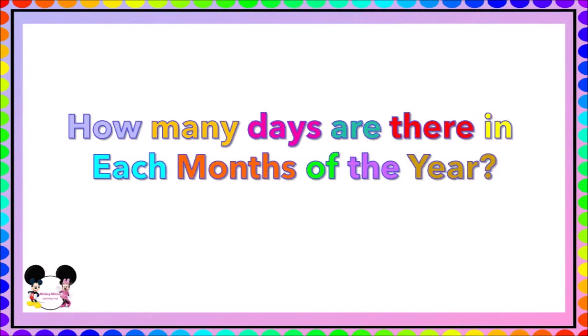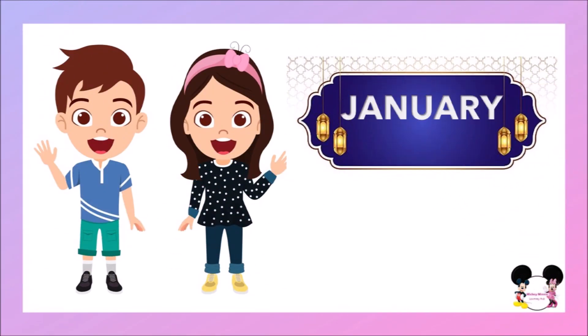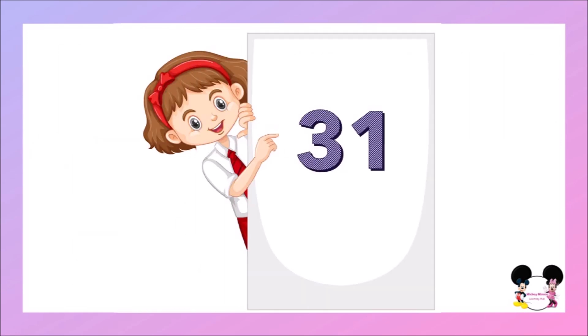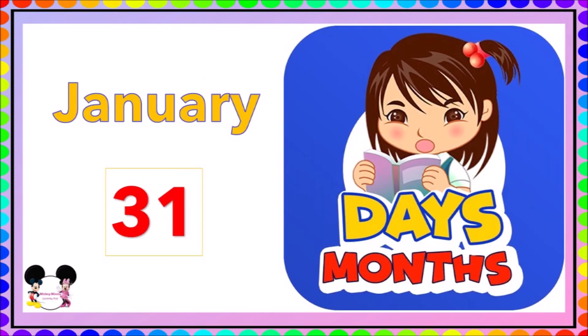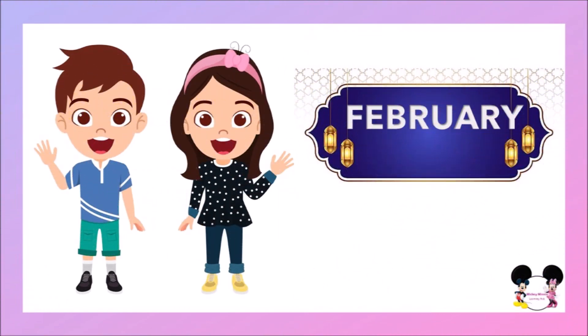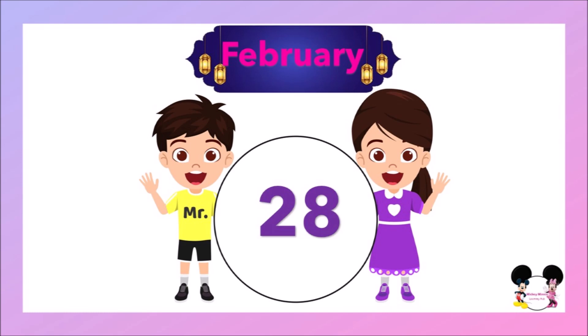January has 31 days. How many days does January have? It's 31 days. February — how many days does February have? It has 28 days. February has 28 days.